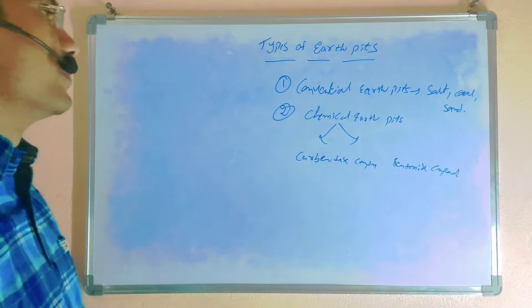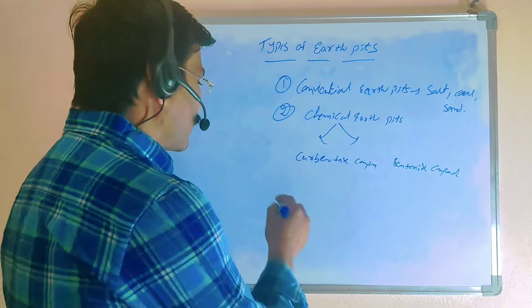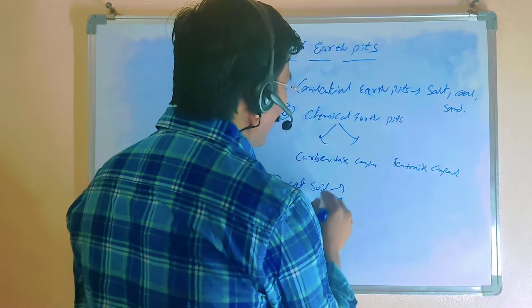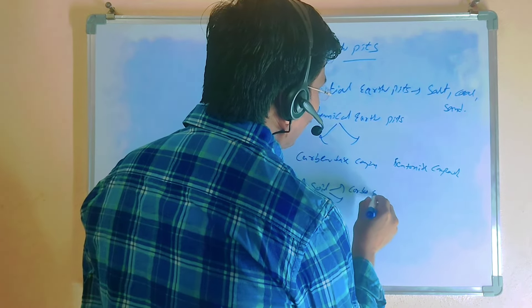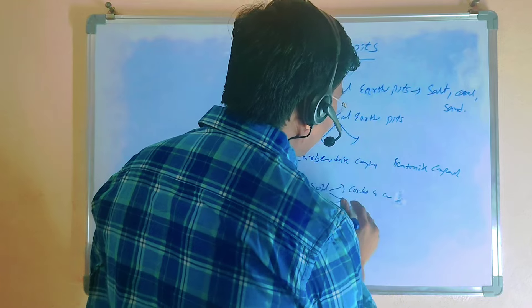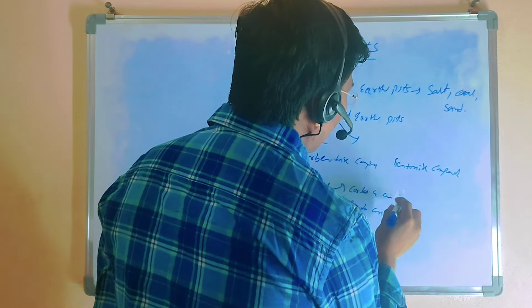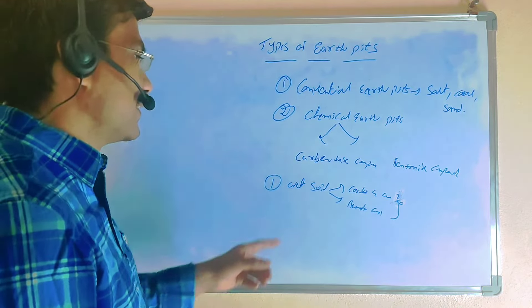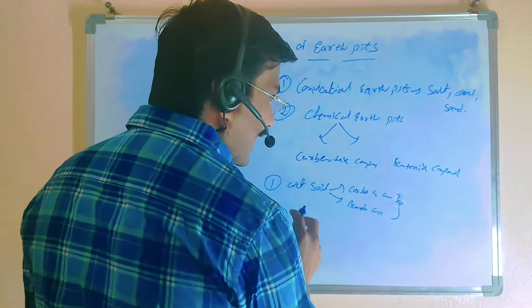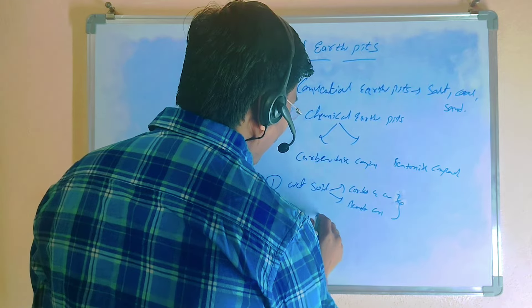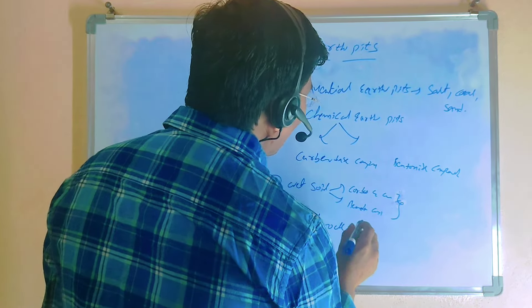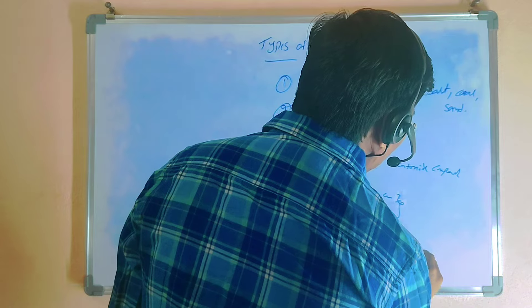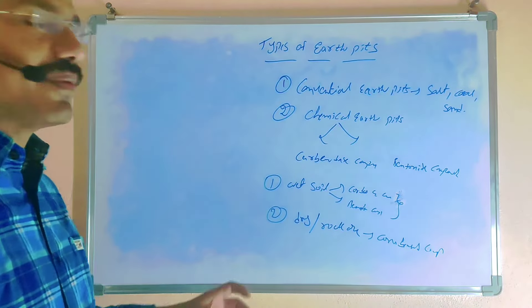Two types of chemicals are available based on soil type. If the soil is wet soil, we are using both the carbon-based compound as well as the bentonite compound. If it is a dry area or rock area, we are using only the carbon-based compound.